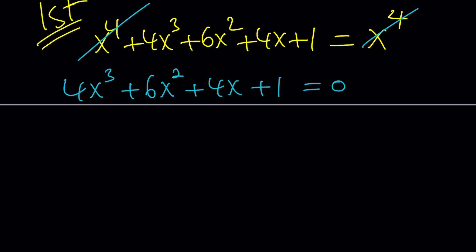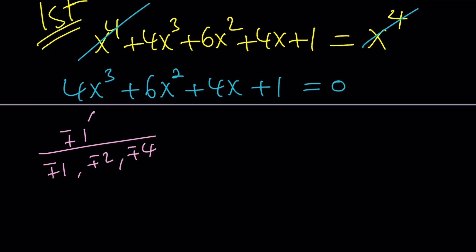Here's how the rational root theorem works. You look at the divisors of 1 — plus or minus 1 — and then divide by all possibilities for 4: plus or minus 1, plus or minus 2, plus or minus 4. You pair them up, like 1 over 2, 1 over negative 4, and so on. One of these will work, hopefully, if there are any rational roots — we don't know.